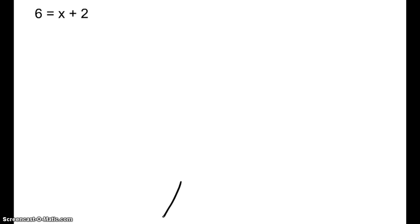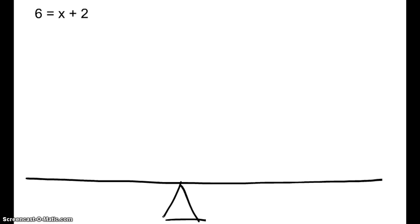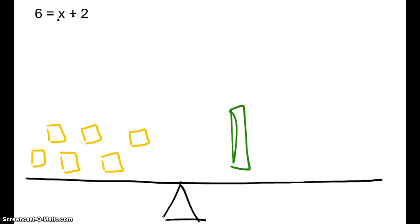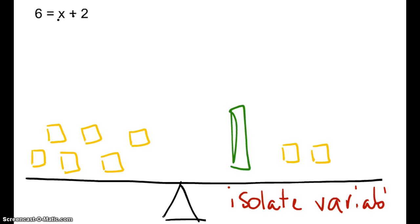Let's write this next one down. 6 positives has the same weight as x and 2 positives. So let's set this out on our algebra balance. I have 6 positives on the left, and I have an x and 2 more positives on the right. Remember, what do I need to do? I need to isolate my variable. Which side am I concerned about? Not the left — it doesn't have an x. I'm concerned about the right because that's where my x is.